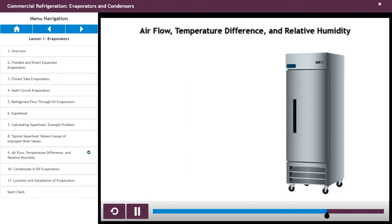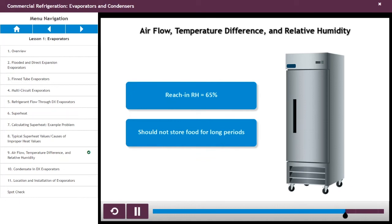A reach-in with a higher TD has a lower humidity of 65%. The relatively low humidity of a reach-in means that food dries out more quickly than in a walk-in, and should not be used to store food for long periods.